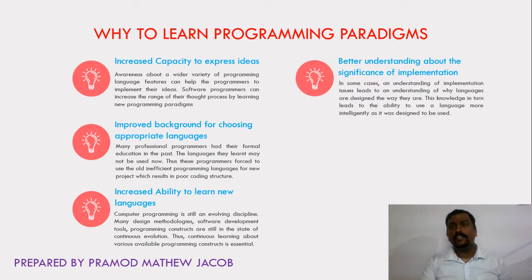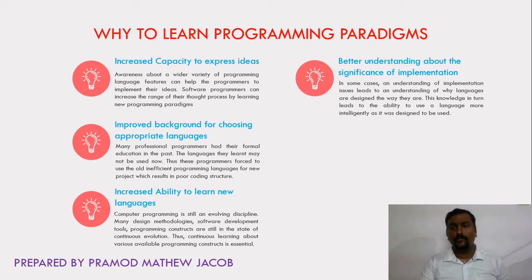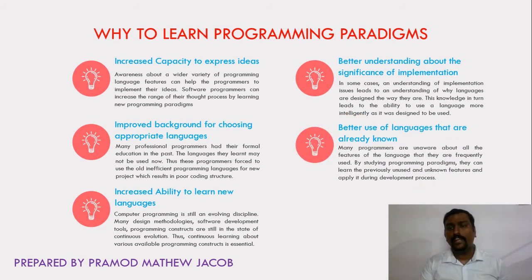Next is better understanding about the significance of implementations. In many cases, an understanding of implementation issues leads to an understanding of why languages are designed the way they are. For example, if a programmer doesn't know why the array index starts from zero, or why standard programming languages implement arrays with an index starting from zero, then he cannot use the concepts of pointers and arrays in an efficient and effective way. Programmers should understand why language features are implemented the way they are.